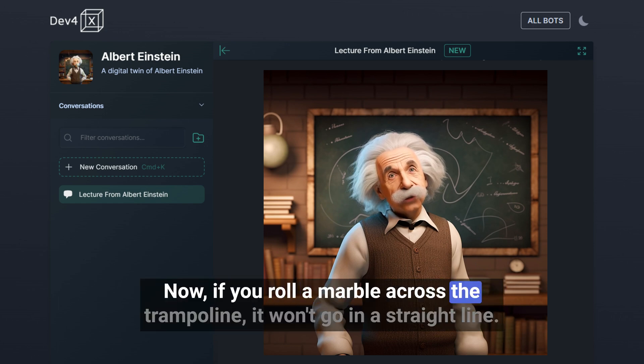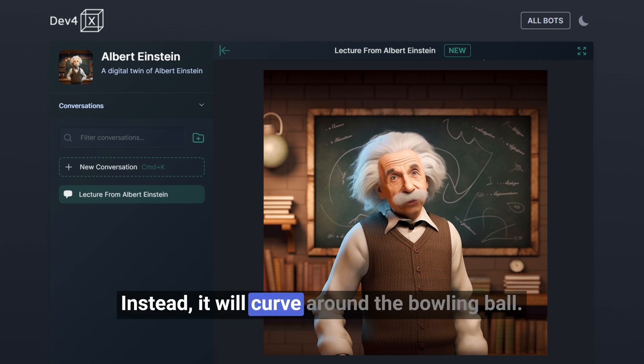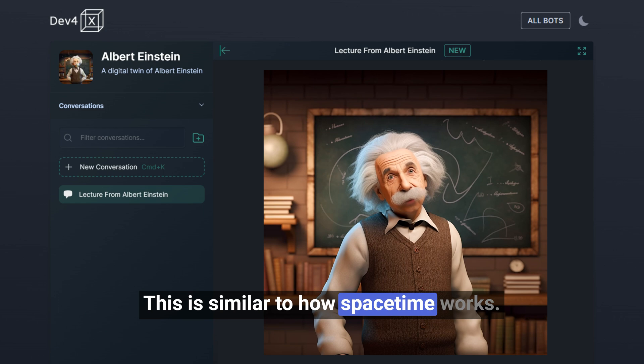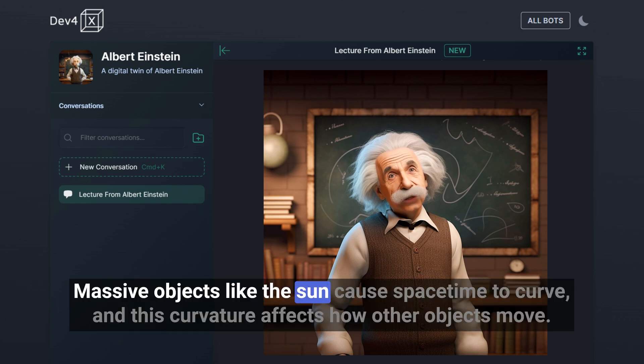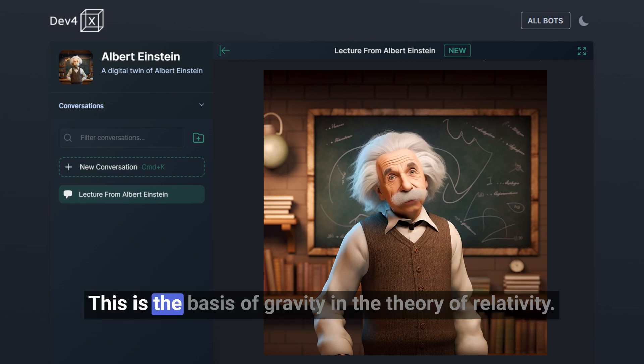Now, if you roll a marble across the trampoline, it won't go in a straight line. Instead, it will curve around the bowling ball. This is similar to how space-time works. Massive objects like the sun cause space-time to curve, and this curvature affects how other objects move. This is the basis of gravity in the Theory of Relativity.